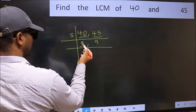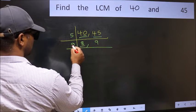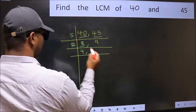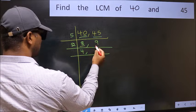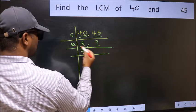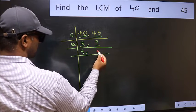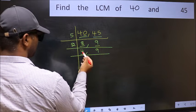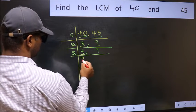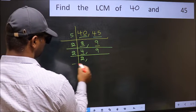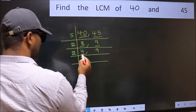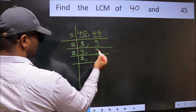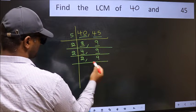Now here we have 8. 8 is 2 times 4. The other number 9 is not divisible by 2, so you write it down as it is. Now here we have 4. 4 is 2 times 2. The other number 9 is not divisible by 2, so you write it down as it is.